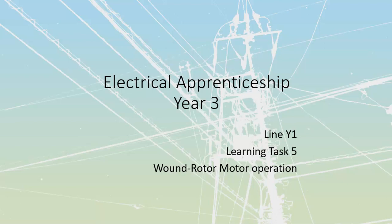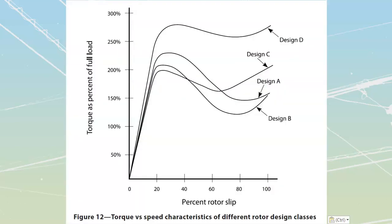Line Y1, learning task 5 - we're going to talk about wound rotor motor operation. We're going to start by talking about what the whole purpose of a wound rotor motor is. This drawing actually comes from your second learning task where we talked about different types of design classes that we could have for a squirrel cage induction motor.